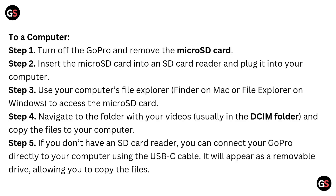To transfer videos to a computer: step one: turn off the GoPro and remove the micro SD card. Step two: insert the micro SD card into an SD card reader and plug it into your computer. Step three: use your computer's file explorer — Finder on Mac or File Explorer on Windows — to access the micro SD card. Step four: navigate to the folder with your videos, usually in the DCIM folder, and copy the files to your computer.